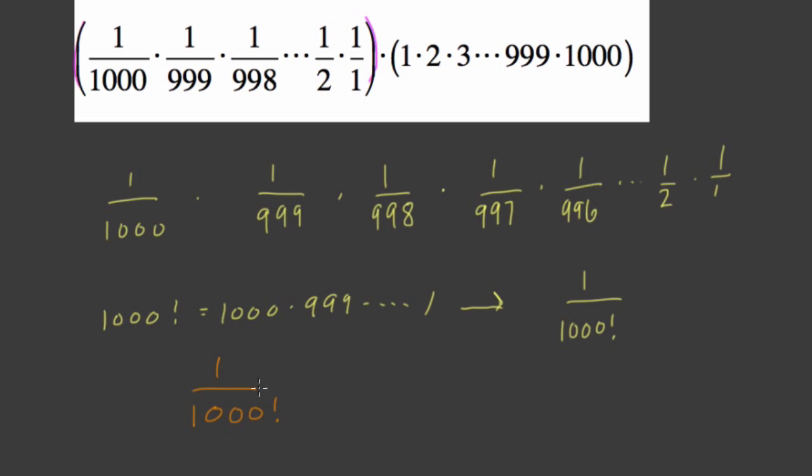Anyway, so here, 1 over 1,000 factorial times what? Well, this is just what? We're kind of reversing the order, 1 times 2 times 3, always up to 1,000, but that's the same thing as 1,000 factorial, but in the reverse order.